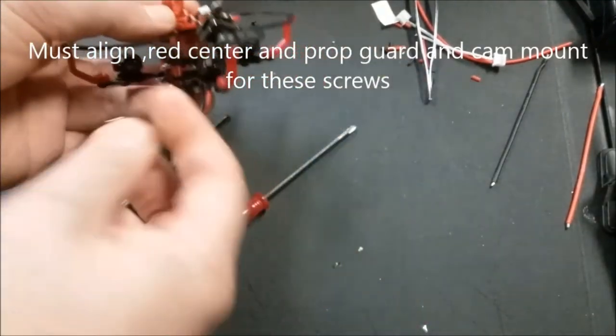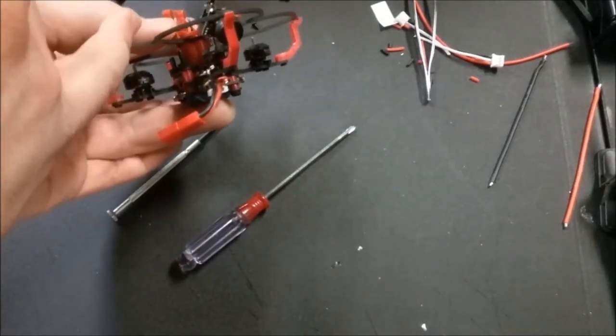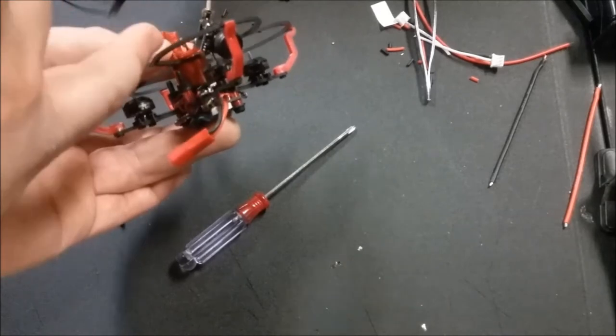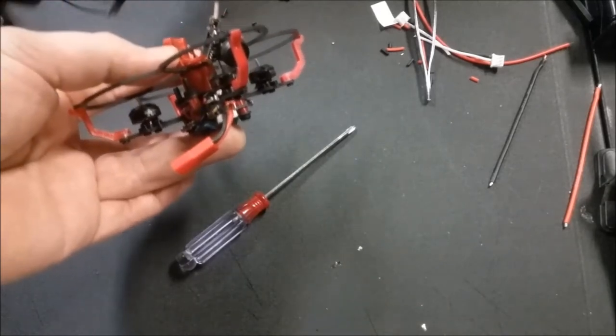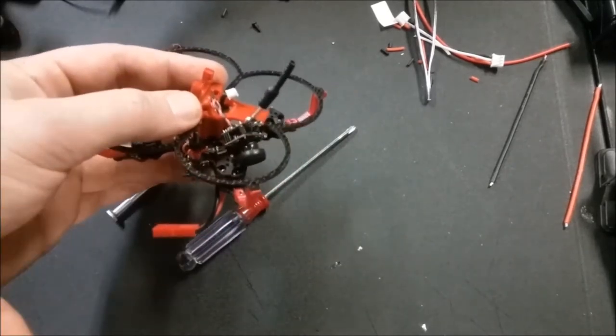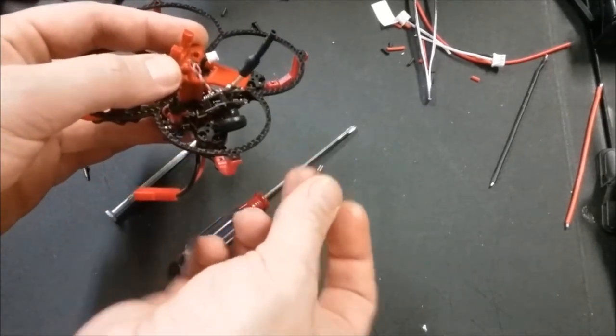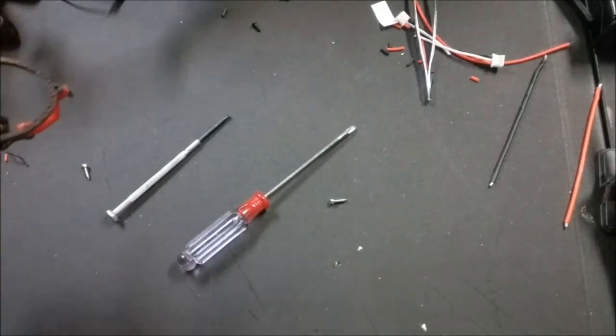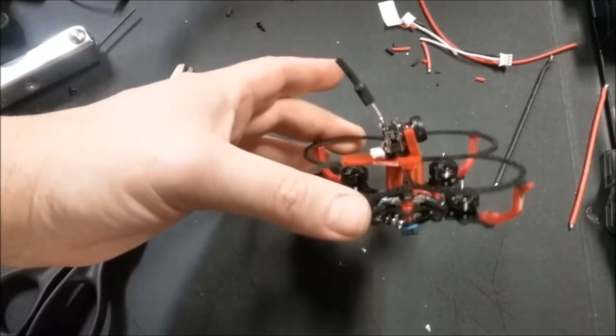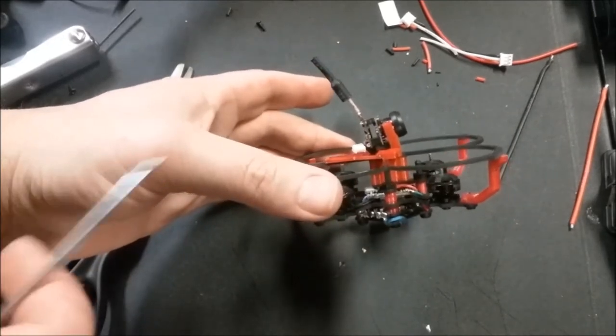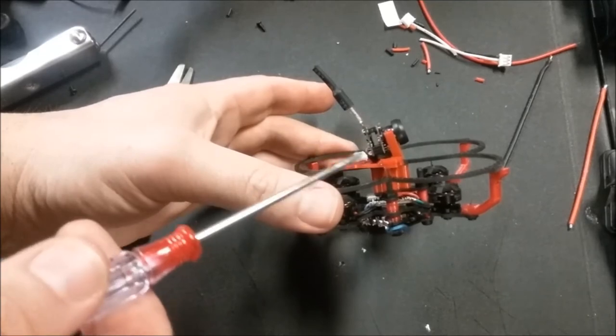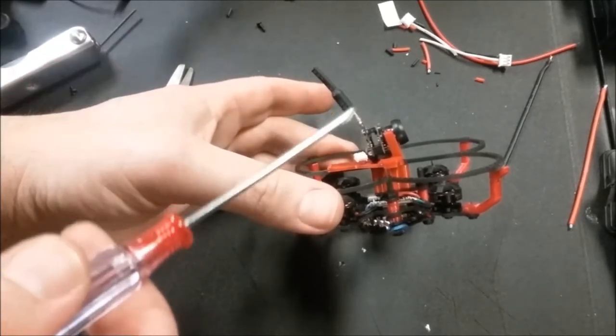And then you want to take these two pieces right here. But the first thing you want to do before you screw those together is you want to feed your wires for your receiver and your camera up through there and then up into here. And then screw that together. And then this just sits down on top of there. And then you can go ahead and put your nuts on.